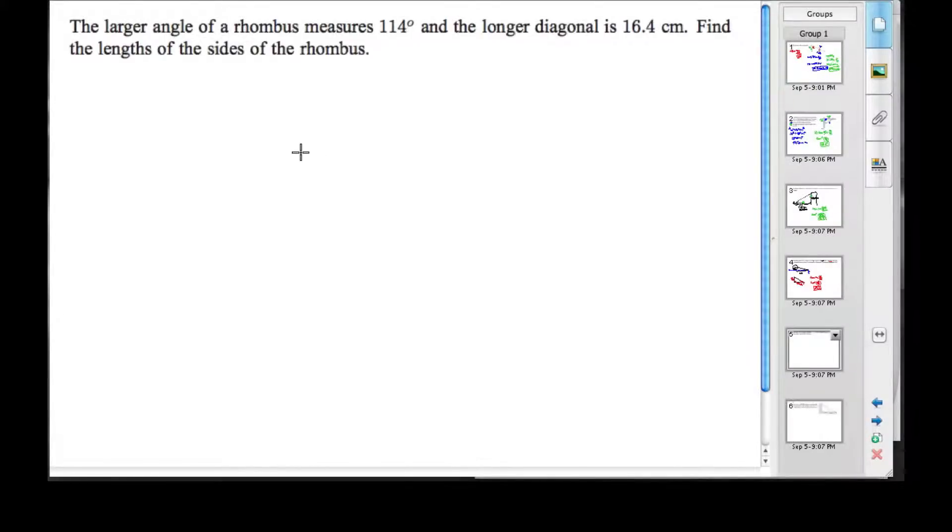In this example, we're going to look at the larger angle of a rhombus that measures 114 degrees and the longer diagonal is 16.4 centimeters. Find the length of the sides of the rhombus.